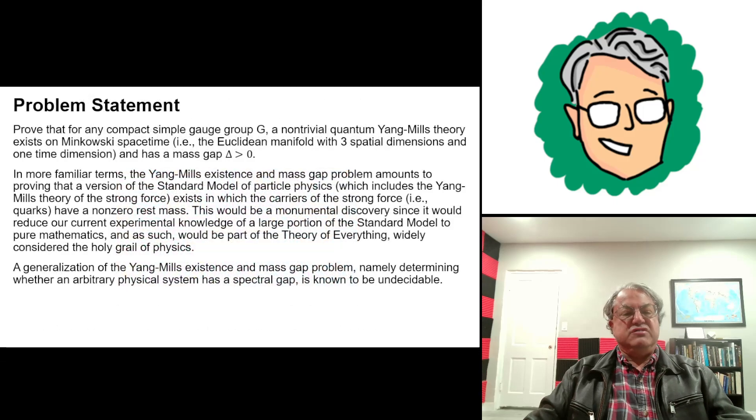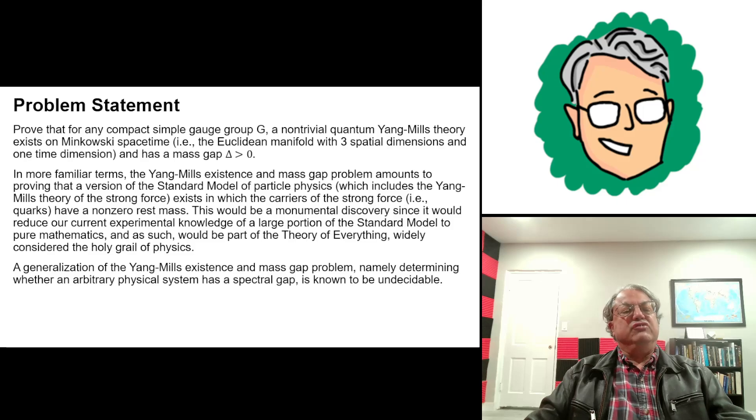So what is this problem, and why is it important? Well, the statement of the problem isn't going to sound really ugly. I'll explain this as I go on. But here's the statement of the problem. So the problem is to prove that for any compact, simple gauge group G,